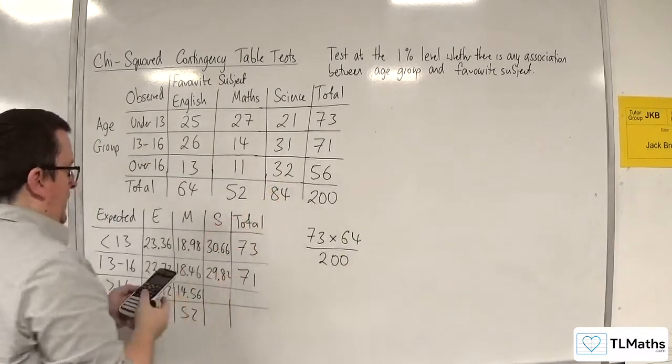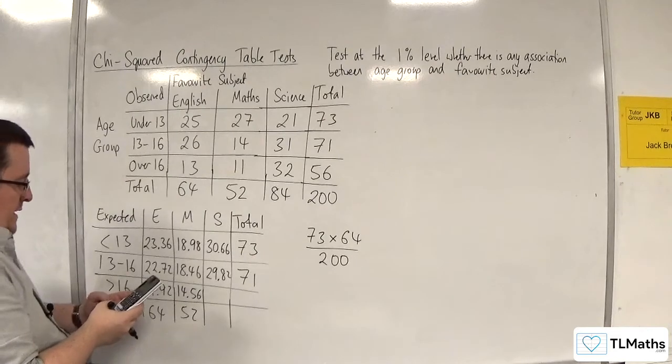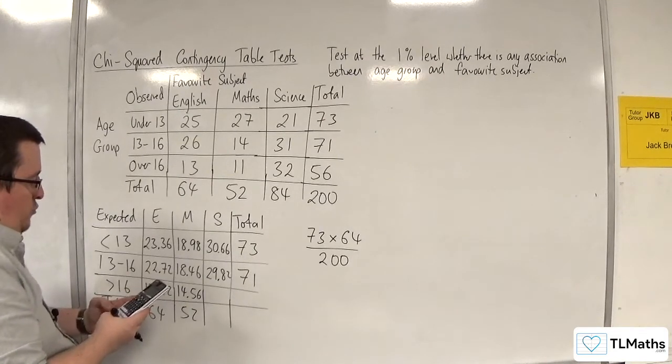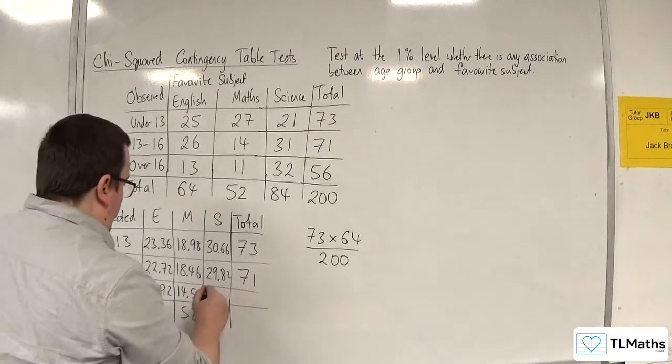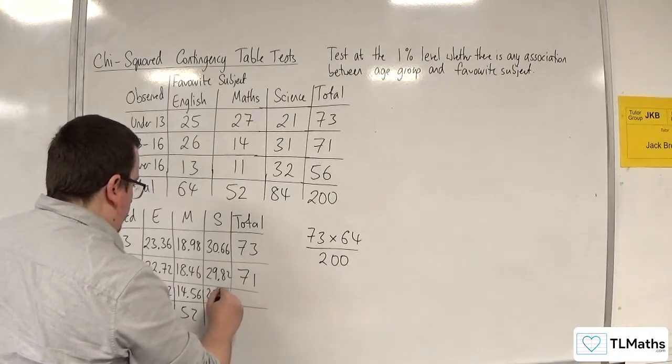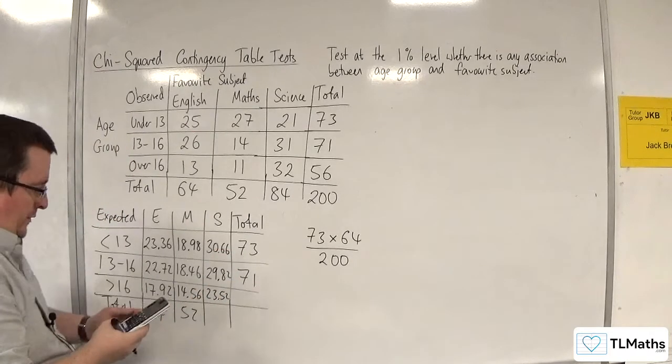So this one. 56 times 84 divided by 200 is 23.52. All right, let's add those up, that column.